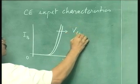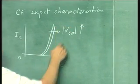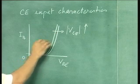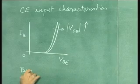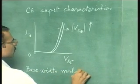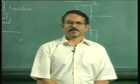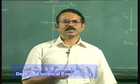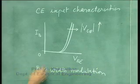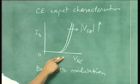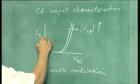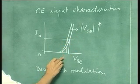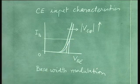As with the output characteristics, we can generate the input characteristics based on the excess carrier distributions in the emitter, base, and collector. Let us draw the excess carrier distribution for different values of VCE assuming IB remains constant. We need to explain that if you maintain IB constant and change VCE, there will be a small change in VBE. If VCE is more, VBE will tend to increase very slightly. Let us draw the excess carrier concentration for one value of collector-to-emitter voltage. This is the emitter, this is the base, and this is the collector.